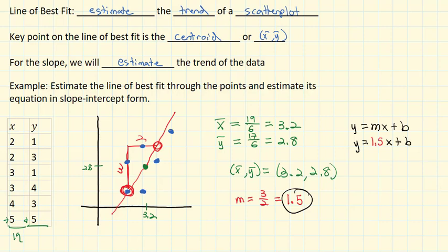And our strategy to find the b was to say, okay, we know a point on the line. The point that's guaranteed to be exactly on the line is our centroid point. We have to use the centroid. We can't use the other points because those were estimated points, and they might be off by a little bit.